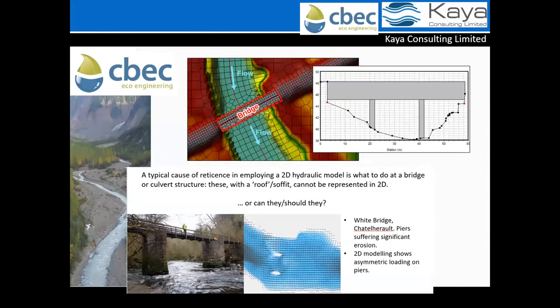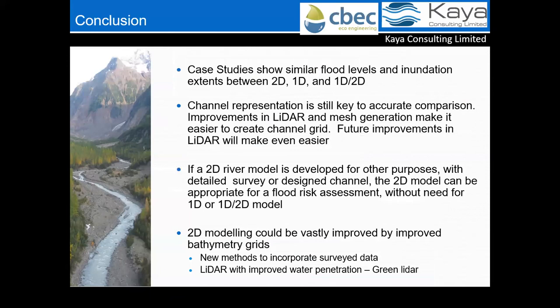Looking at examples of embedding structures within 2D models: where you've got a very high deck with a couple of piers that would interfere with flow, that could be easily represented in 2D as pier structures. Also, within certain software you can now quite easily insert 1D modules within a 2D domain very effectively, so even within the 2D model you can have selected 1D components rather than having the whole watercourse represented in 1D.